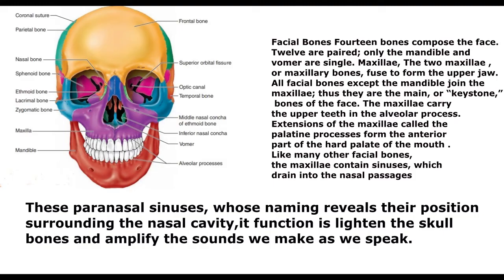Facial bones. Fourteen bones compose the face: 12 are paired, and only the mandible and vomer are single. Maxillae: the two maxillae, or maxillary bones, fuse to form the upper jaw. All facial bones except the mandible join the maxillae, making them the main, or keystone, bones of the face. The maxillae carry the upper teeth in the alveolar process. Extensions called the palatine processes form the anterior part of the hard palate. The maxillae contain paranasal sinuses, which drain into the nasal passages and function to lighten the skull bones and amplify sounds we make as we speak.